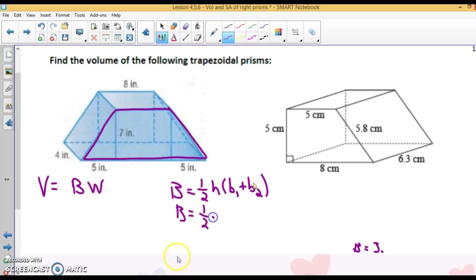It's one-half times the height of this trapezoid is 7. B sub 1 is 8, plus B sub 2, we need to do some work. This middle chunk is 8, and I've got 5 and 5, so it's 18. When you find the area of that trapezoid, you will get 91. The width is the distance between the two bases right here, which would be 4. So my volume is 91 times 4, 364 cubic inches.